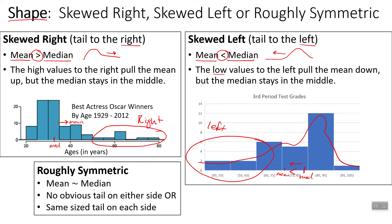If the mean and the median are really close to each other — there's no obvious tail on either side, or there's a tail on both sides — then the data can look roughly symmetric. It doesn't have to be exactly symmetric. We pretty much always just say it's roughly symmetric, or it appears to be symmetric. We add that extra word in there just to be safe.